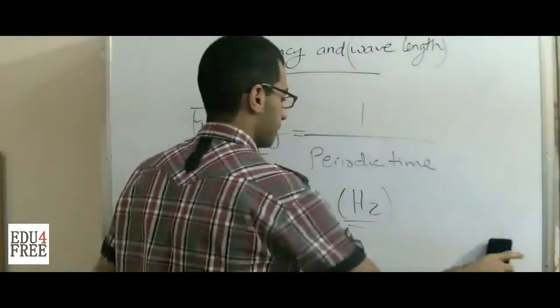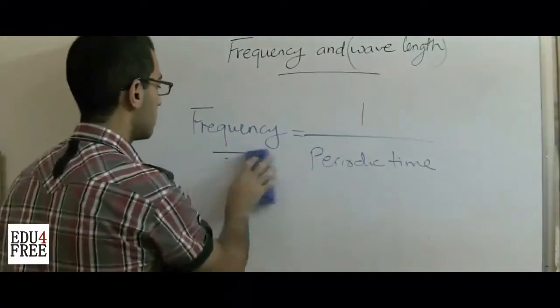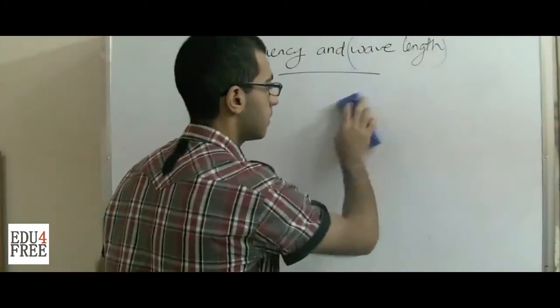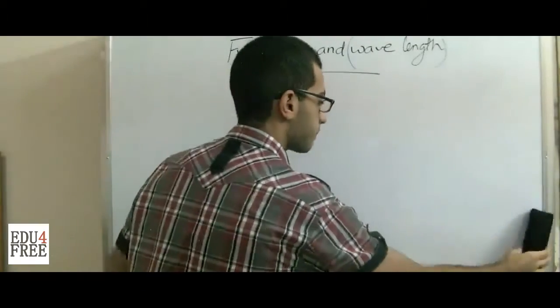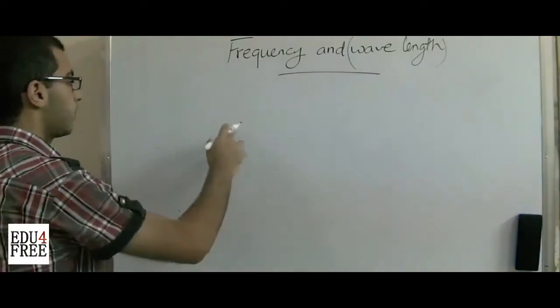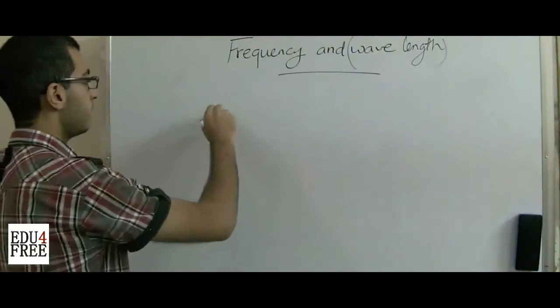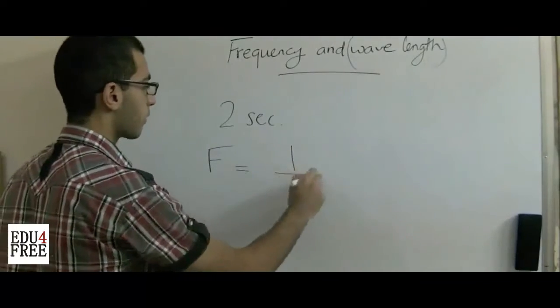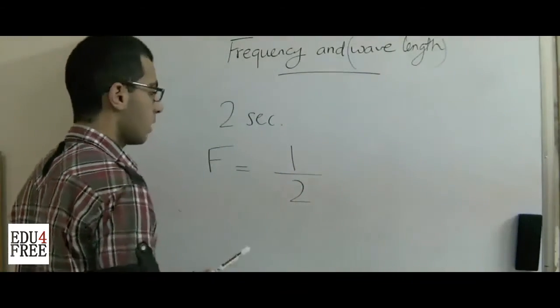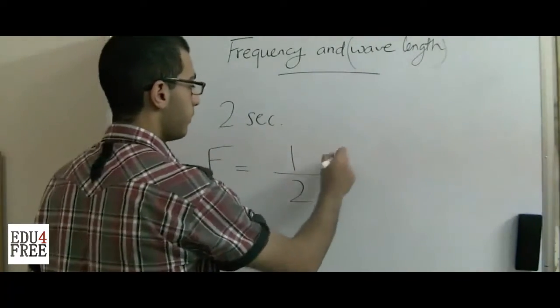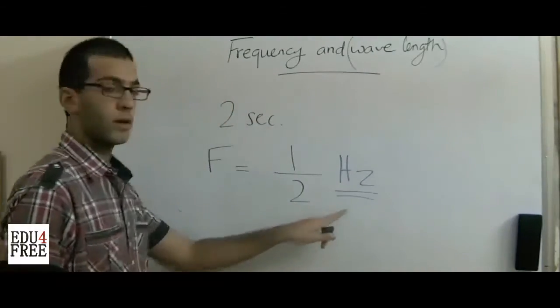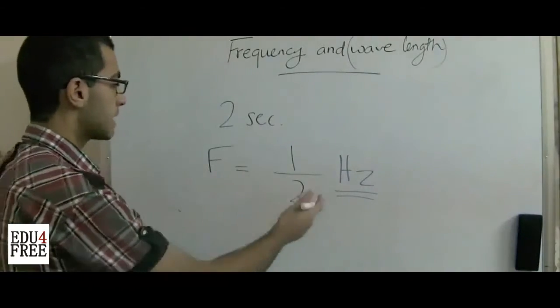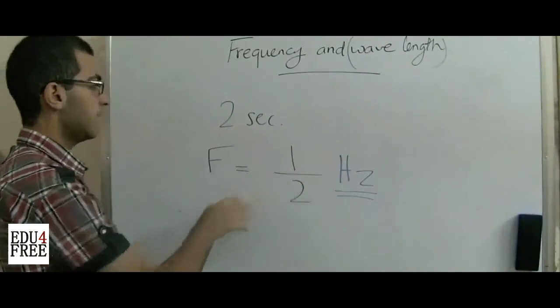For example, if a periodic time of the wave is two seconds, so the frequency will be one over two. So it's half Hertz. Half Hertz. Not half a second or other unit. It's half Hertz. That's how we get the frequency.